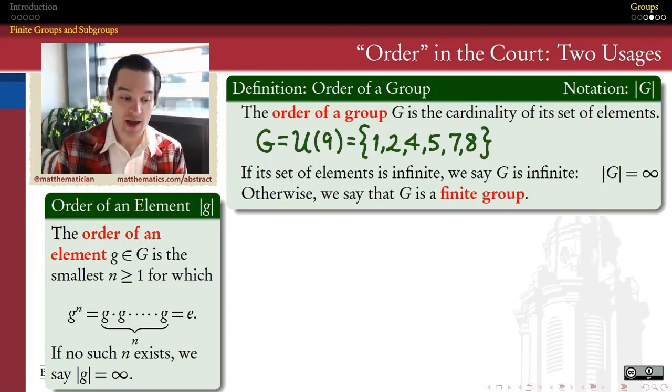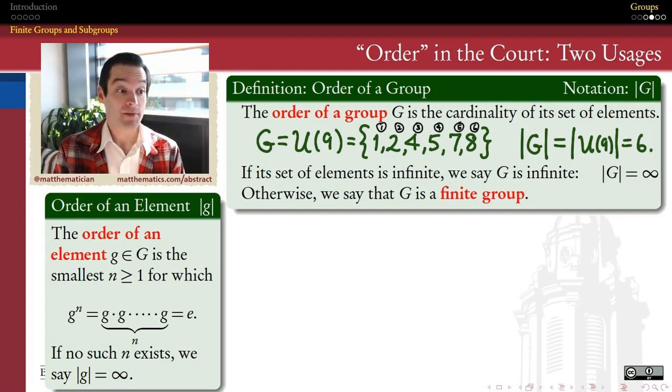For example, if we have the multiplicative group of units modulo 9, then that group consists of the equivalence classes mod 9 of 1, 2, 4, 5, 7, and 8. And so we would say that the order of this group is 6. All we do is just count up the number of elements that are in my set. When that number is finite, as it is in this example, 6 is a finite number, then we will say that G is a finite group.